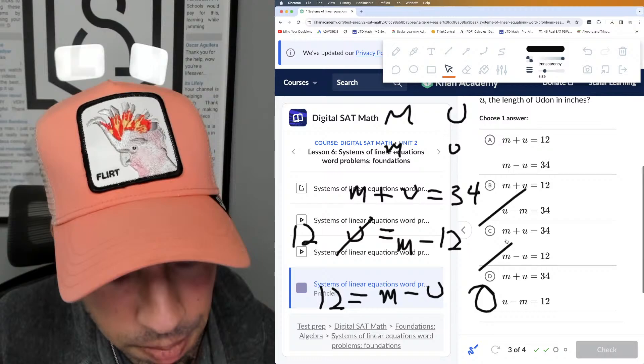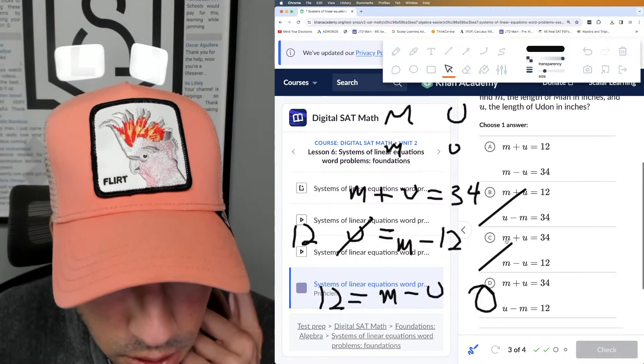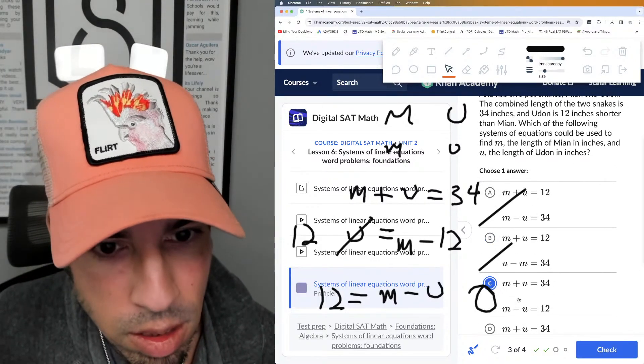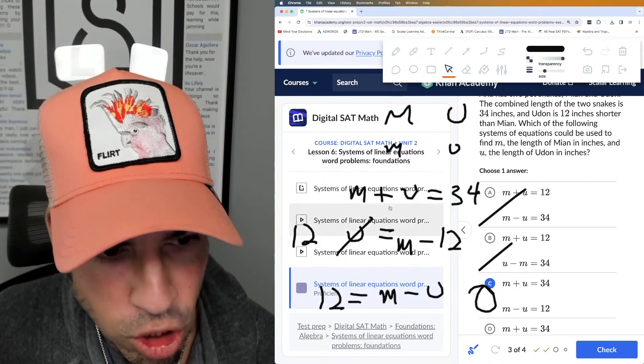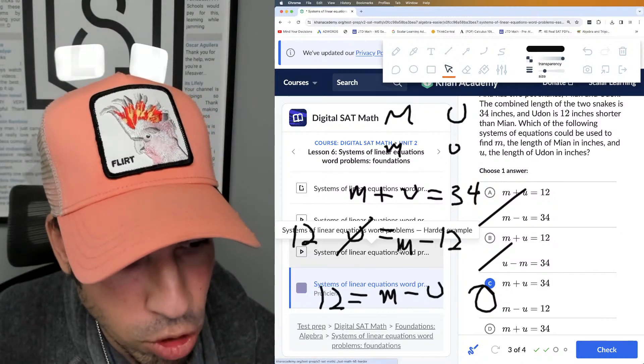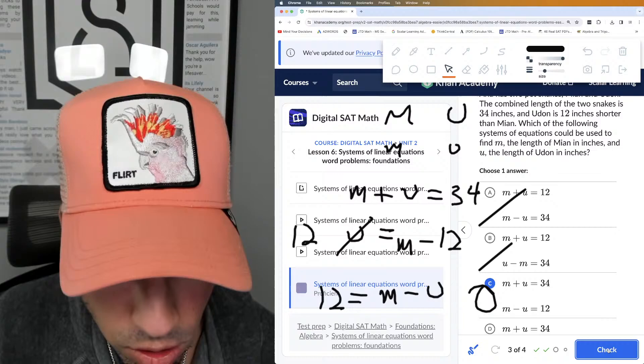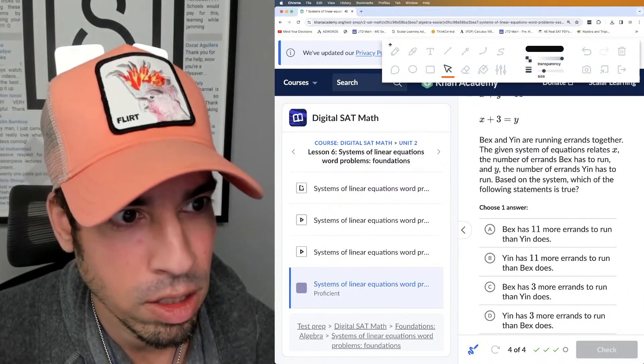So it is C. We'll look at option D just for fun. u minus m is—yeah, so that's backwards, right? So anyways, C is the winner. And then we're just going to double-check: Udon is 12 inches shorter. So in my original equation, if m is 24, Udon would be 12, so that's correct.